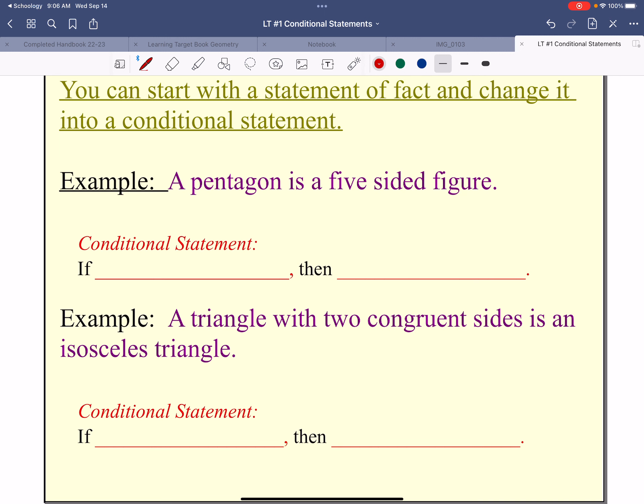You can start with a statement of fact and change it into a conditional statement, such as a pentagon is a five-sided figure. That is a statement of fact. If a figure is a pentagon, and notice what I did there, I made this part the if, P, then Q. It is a five-sided figure.